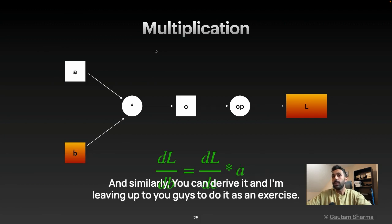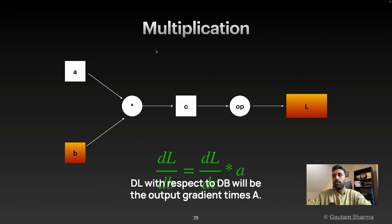And similarly, you can derive it and I'm leaving up to you guys to do it as an exercise. DL with respect to DB will be the output gradient times A.